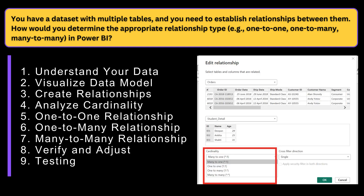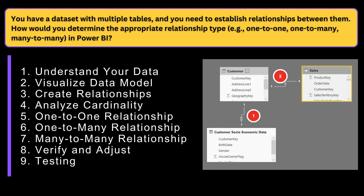Next, you have to analyze the cardinality. Once the relationships are established, analyze the cardinality of each relationship and determine whether it is one-to-one, one-to-many, or many-to-many. A one-to-one relationship exists when each record in the primary key table corresponds to exactly one record in the related table and vice versa. This type of relationship is less common, but may occur in scenarios where there is a strict one-to-one correspondence between entities.